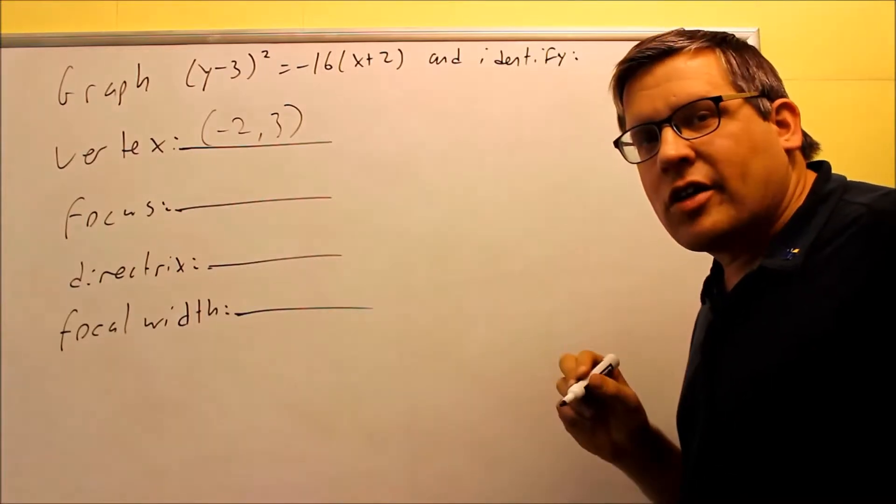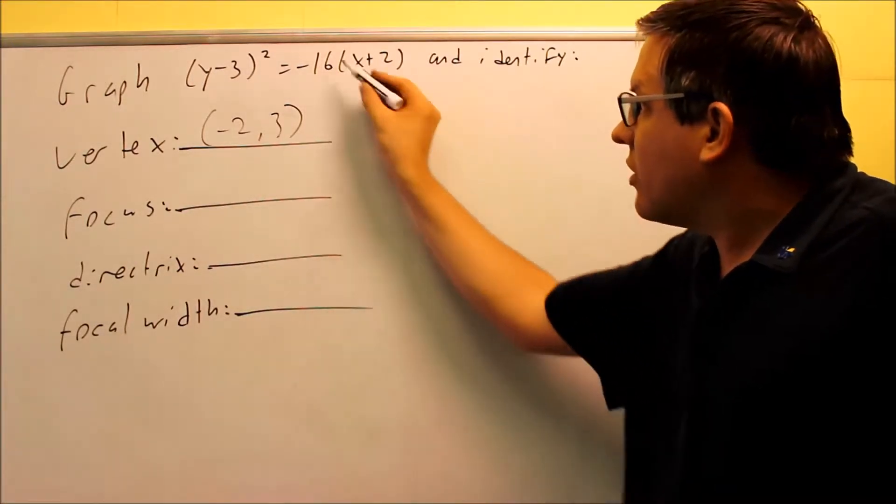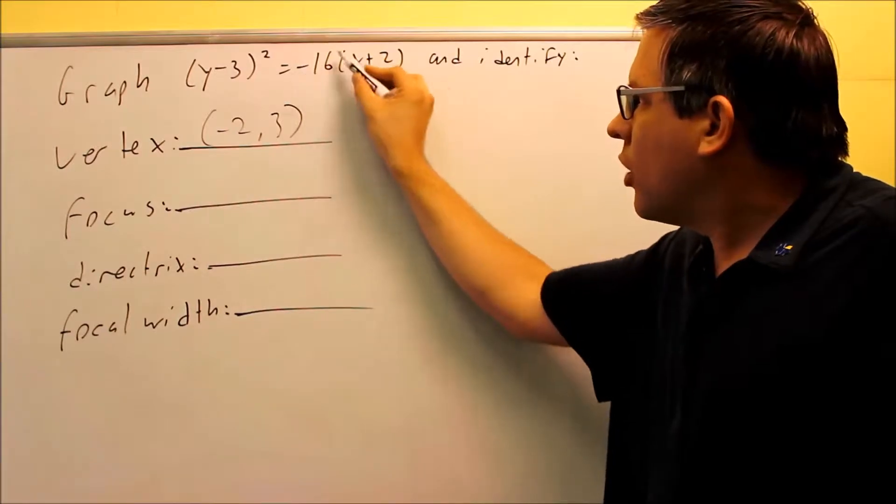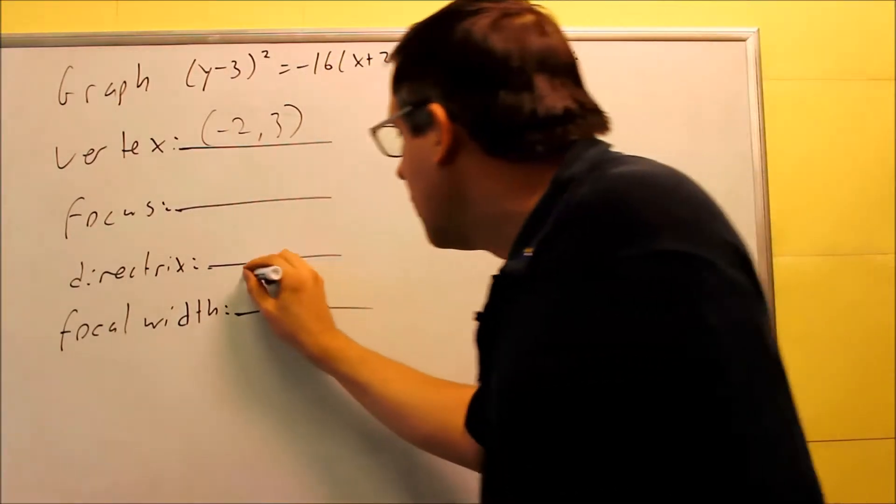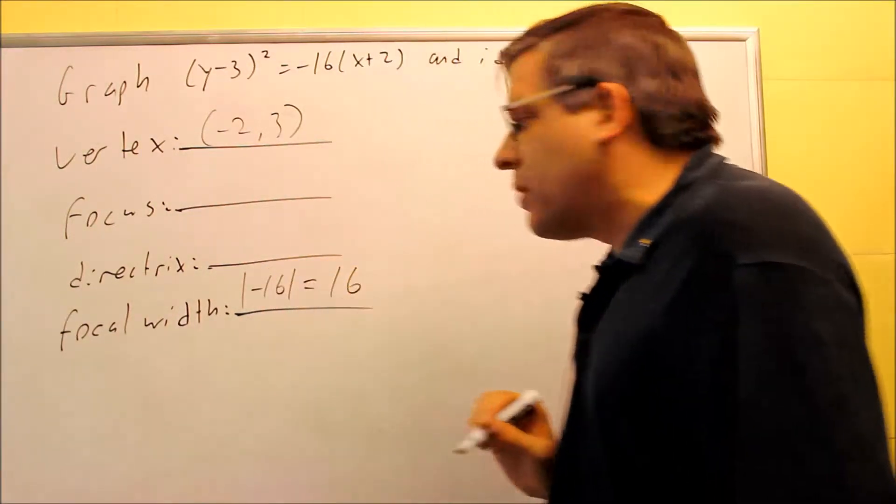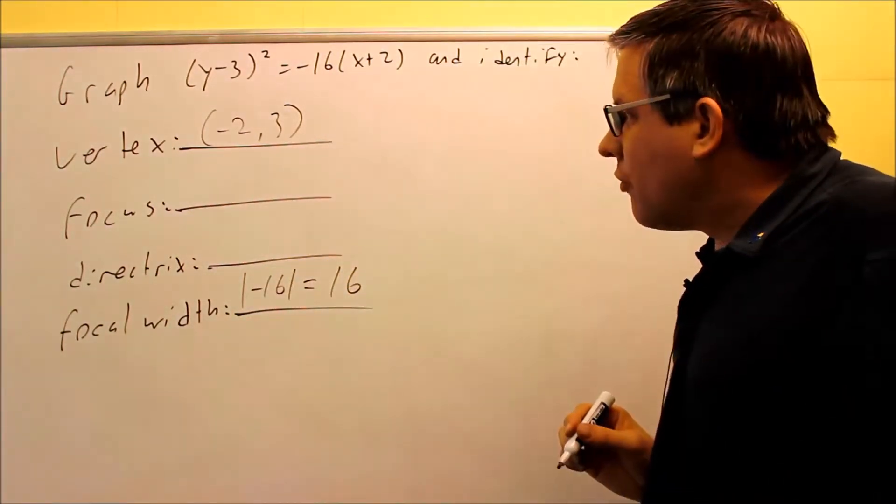My focal width I'll find exactly the same way as the ones that are at 0,0. I take the absolute value of this number, the one in front of the part that has the non-squared variable in it. I'm going to do absolute value negative 16 equals positive 16, so now I know the focal width.